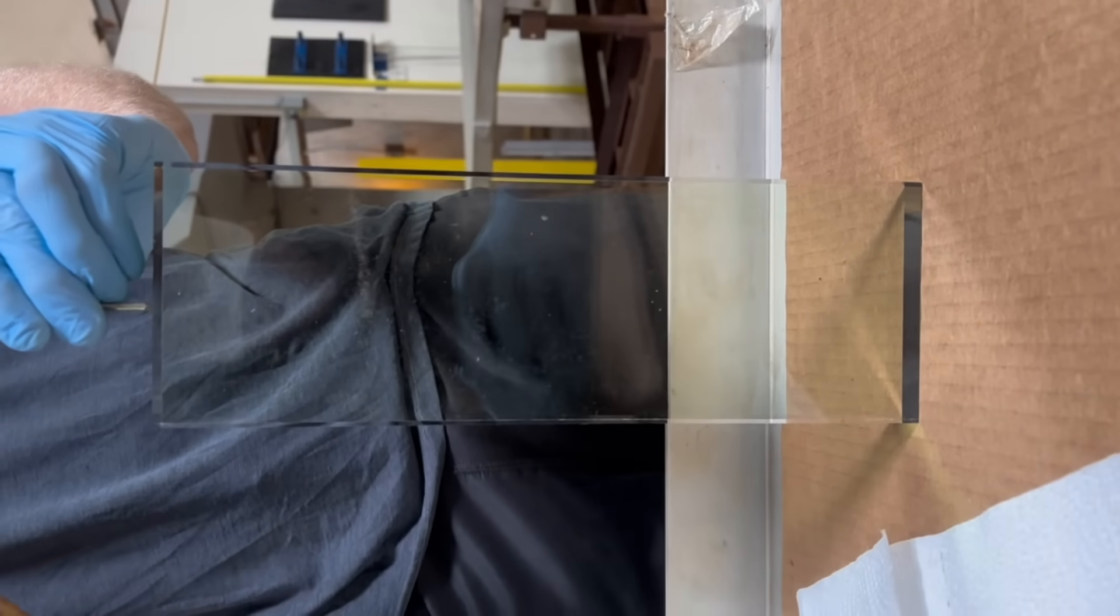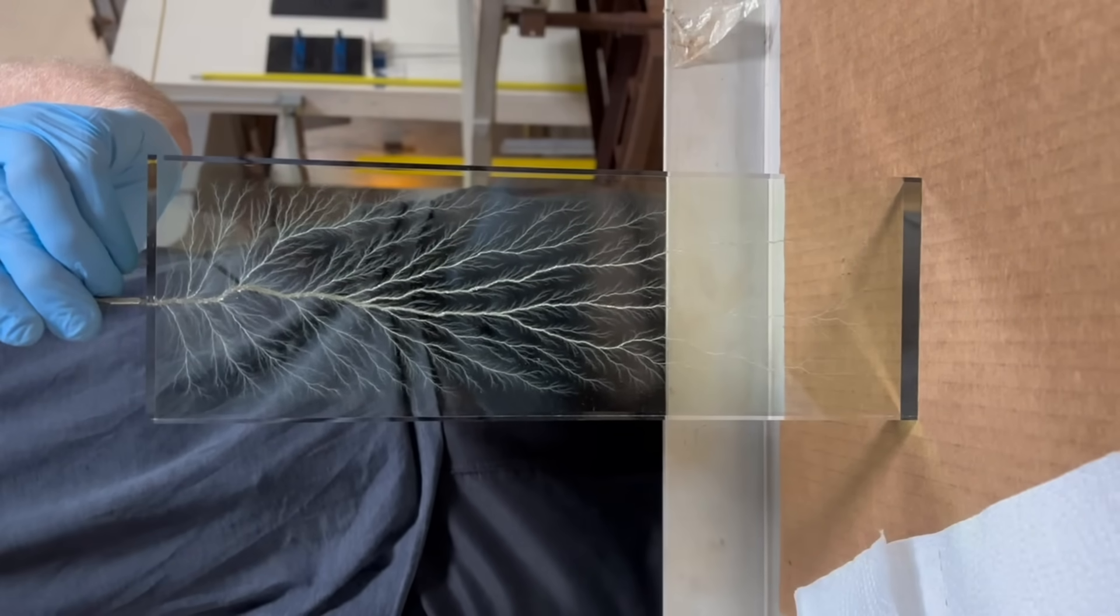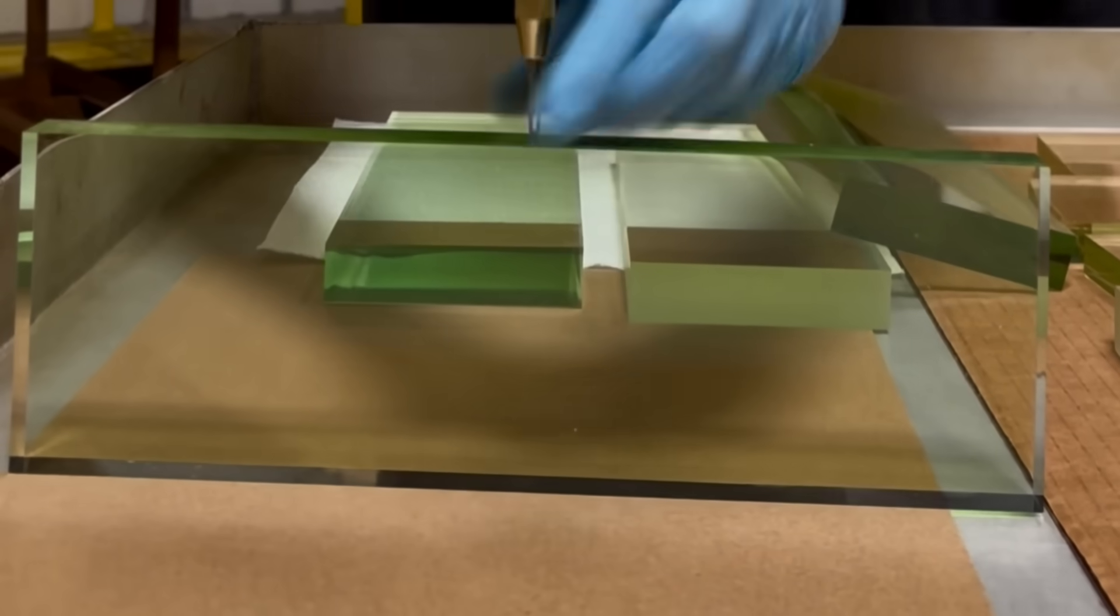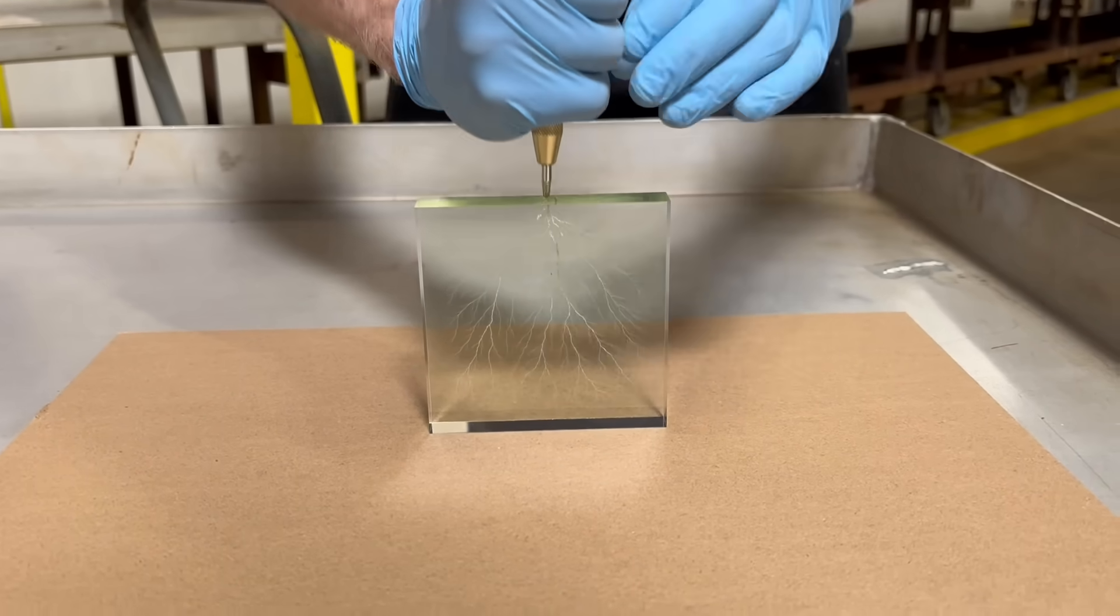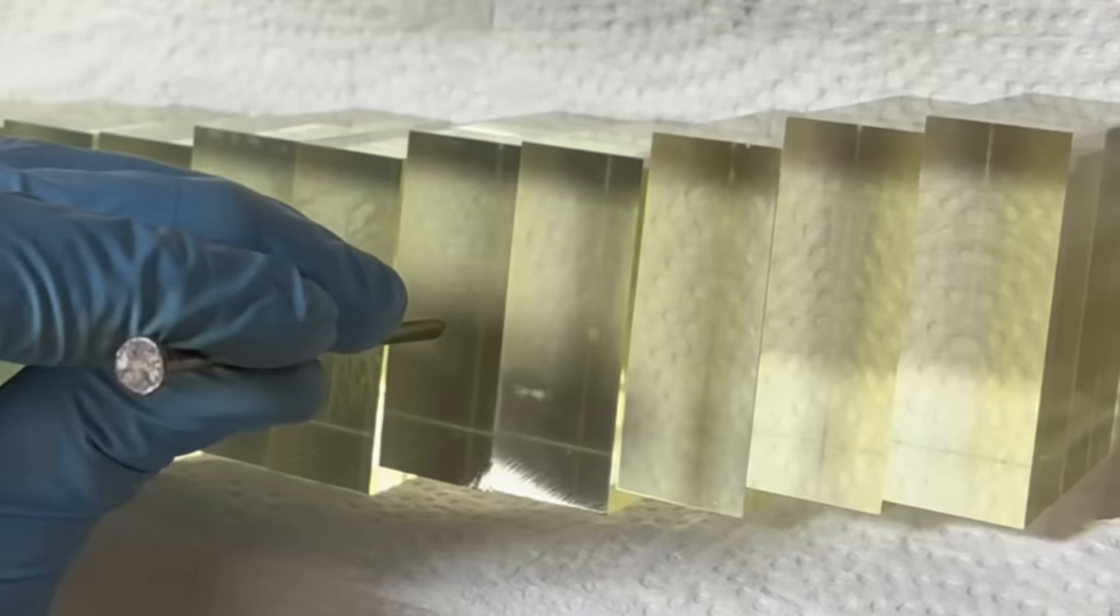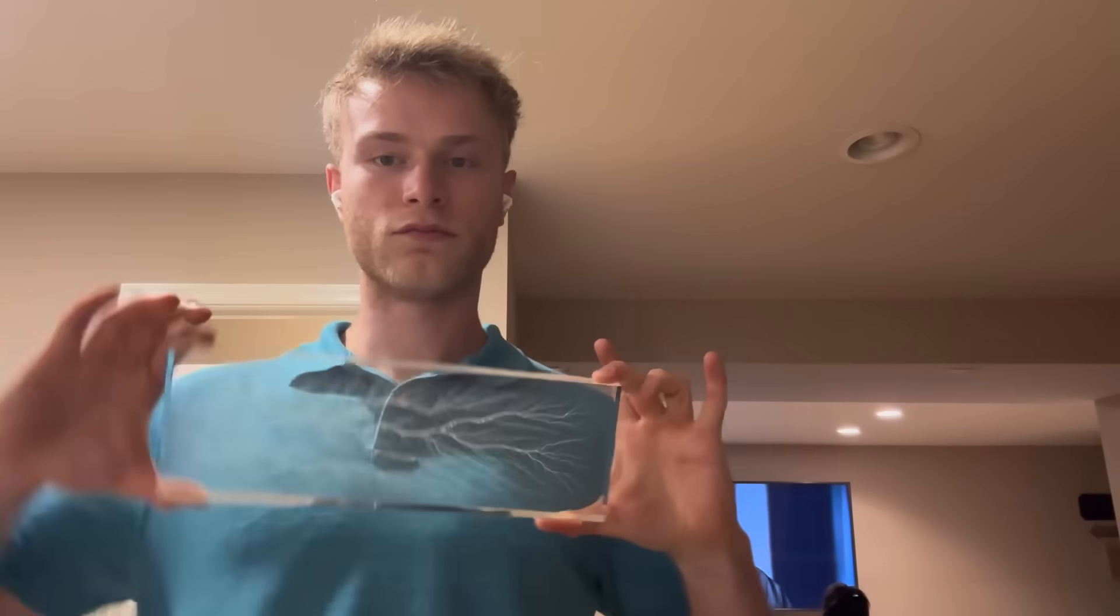This is a block of acrylic and now it's a Lichtenberg figure, and so is this and also this. So what are these things, how do we make them, and what can we use them for?